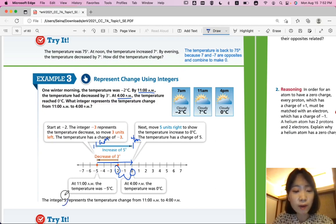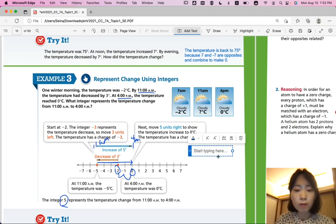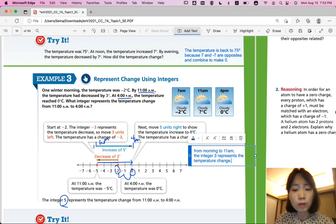But if we were to say from morning to 11 a.m., the integer 3 represents the temperature change. But from morning to 4 p.m., the integer 7 represents the temperature change. Okay? So it depends what intervals we're using.